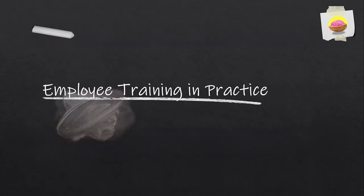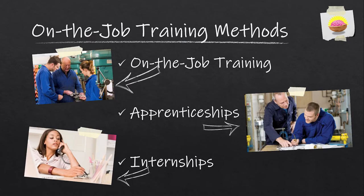Now let's talk about how we actually do employee training — a quick inventory you'll likely recognize. First, we have on-the-job training methods: training provided by the employer to the employee on the job. This includes actual on-the-job training where one person trains another and helps them figure out how things are done. We have apprenticeships — not every industry uses them, but a lot of the trades do: metalworking, welding, construction, finished carpentry. And then we have internships, which are basically an opportunity for an employer to test drive an employee and vice versa, to see if there's a good match — and during the internship, a lot of training takes place.